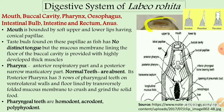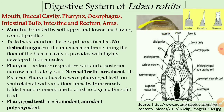The mouth has soft upper and lower lips, and on these lips conical papillae are present. On these papillae, taste buds are present, which allow the fish to taste the food. The mouth leads into the buccal cavity.